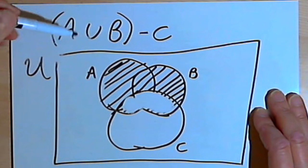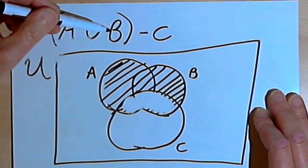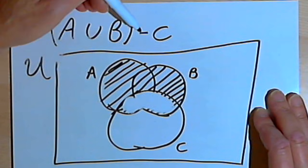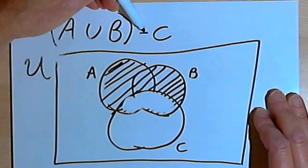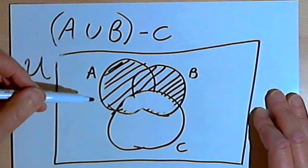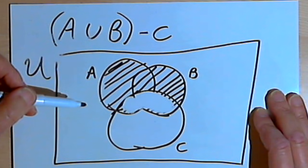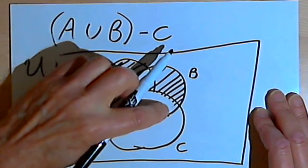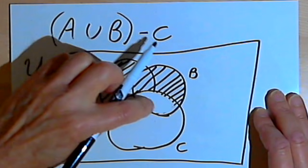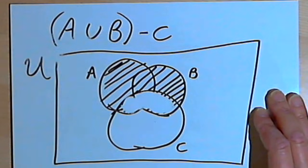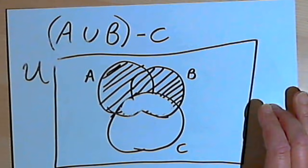So that was the union of A and B, and then I took away anything that happened to be in C.